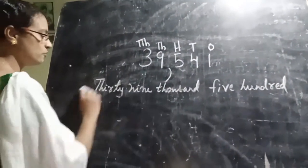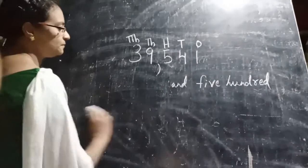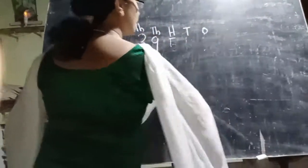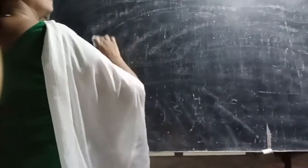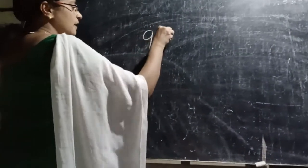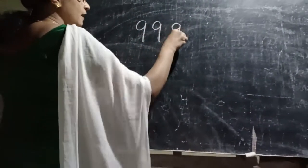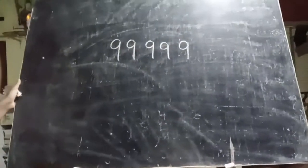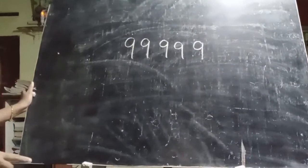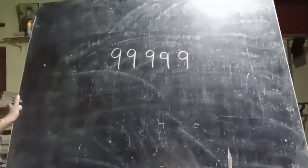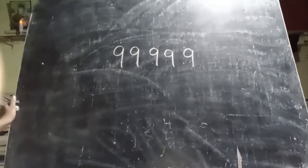One more question: the digits nine, nine, nine, nine, nine. This number is the largest five-digit number.